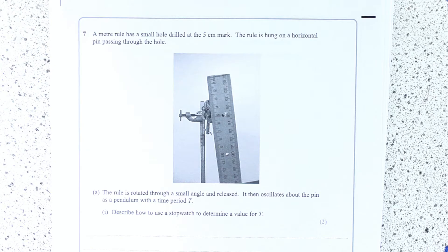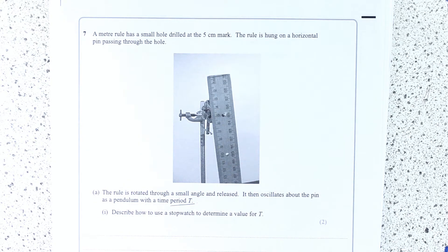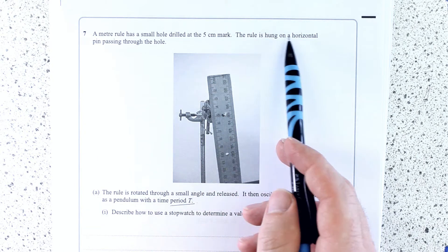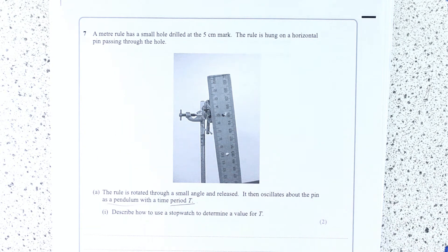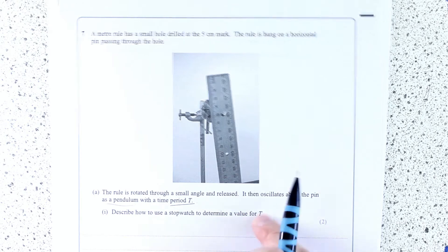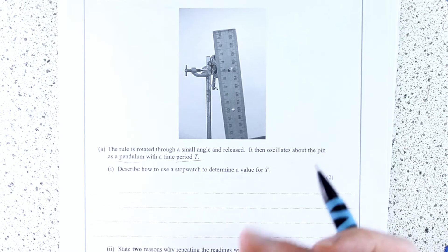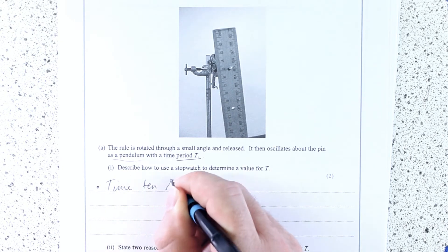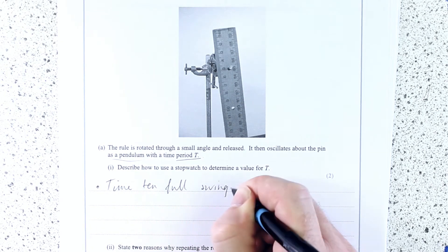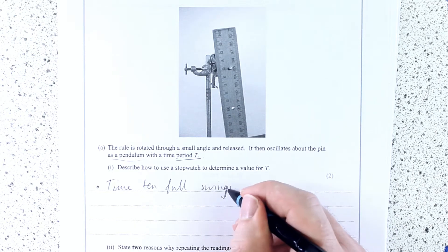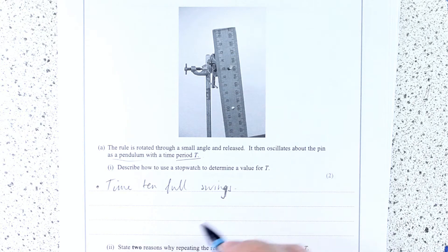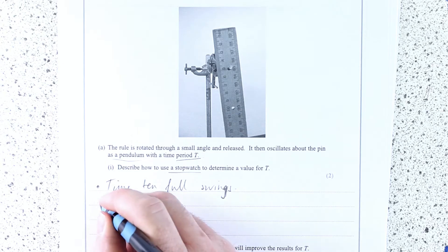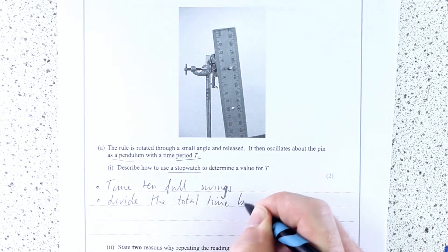You will have done some kind of oscillation practical where you've had to measure a time period, and that's what this question is all about. It's basically acting like a pendulum. Describe how you use a stopwatch to determine a value for T. So you don't try and do one swing, do you? You record at least five swings, so I would probably do ten. Ten full swings. Now I might want to put down I'd use a marker at the equilibrium position so I could more easily tell when I was done with full swings. But we're just after the stopwatch here. So ten full swings, divide the time by ten.